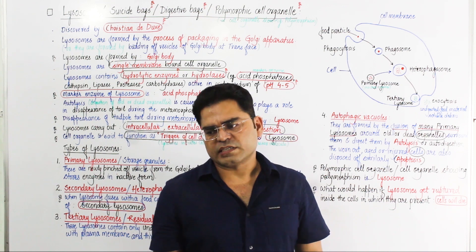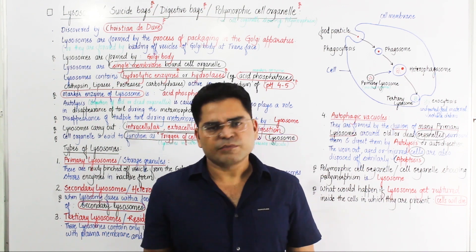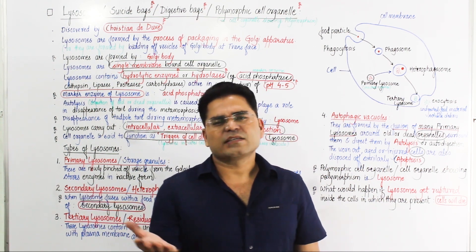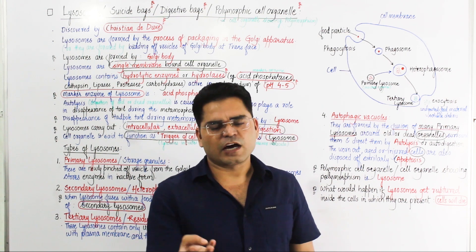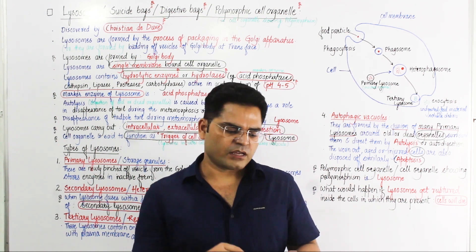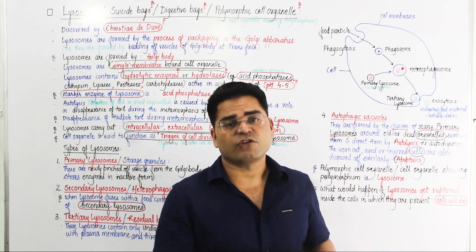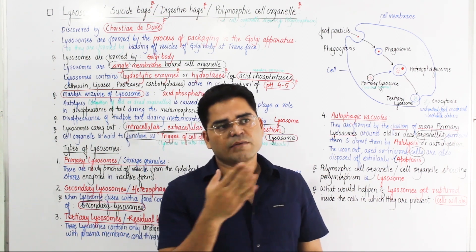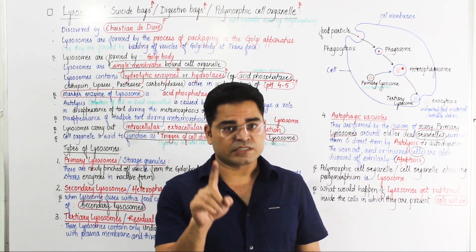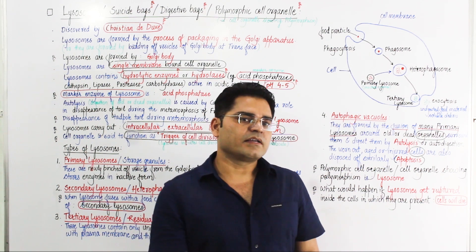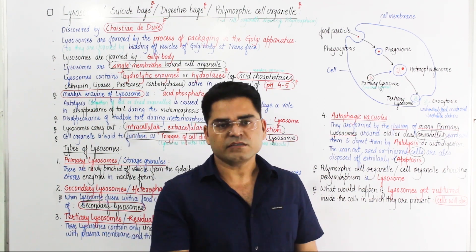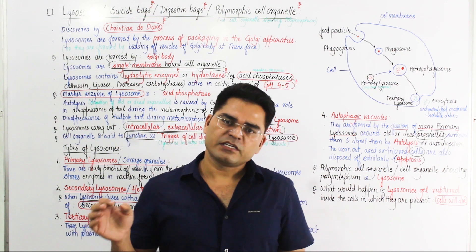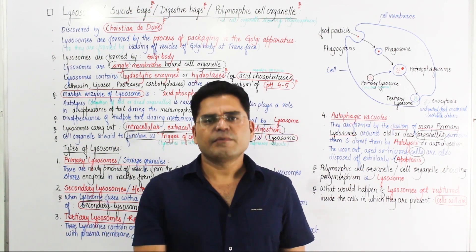Lysosomes contain digestive enzymes that work in acidic media. The enzymes include proteases, carbohydrases, lipases, cathepsin, and acid phosphatases. The marker enzyme of lysosomes is acid phosphatase. Cathepsin is another important enzyme found in lysosomes.